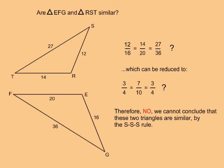In this example, are triangle EFG and triangle RST similar? I take the shortest side from the smaller triangle and put it over the shortest side from the larger. I take the medium length side from the smaller and put it over the medium length side from the larger. I take the longest side from the smaller and put it over the longest side from the larger.